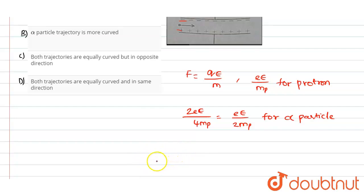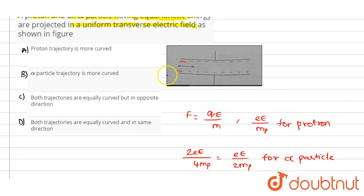opposite in charge, the one with higher acceleration has a more curved trajectory. Out of these four options, option A states proton trajectory is more curved. So option A is the correct answer for this question.